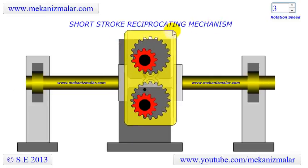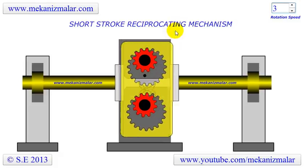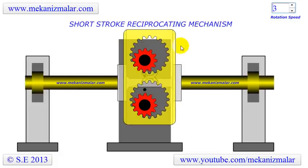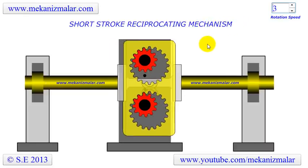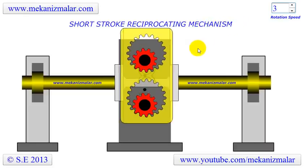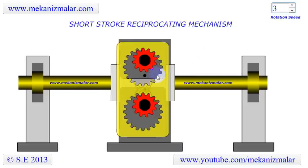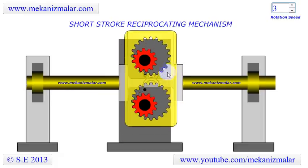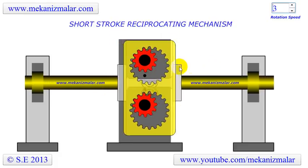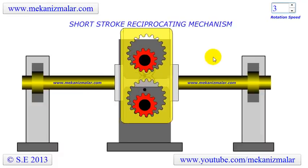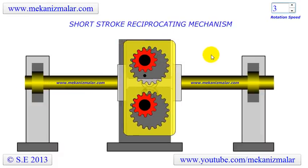Here is an ingenious reciprocation mechanism which allows smooth transition of motion from one direction to the other. We call this mechanism the short stroke reciprocating mechanism. This is because it belongs to a family of reciprocation mechanisms where it has the shortest stroke in that family. It can be modified such that you can have any length of stroke you desire — a unique characteristic of this family of mechanisms, even though it is not a simple mechanism to build.